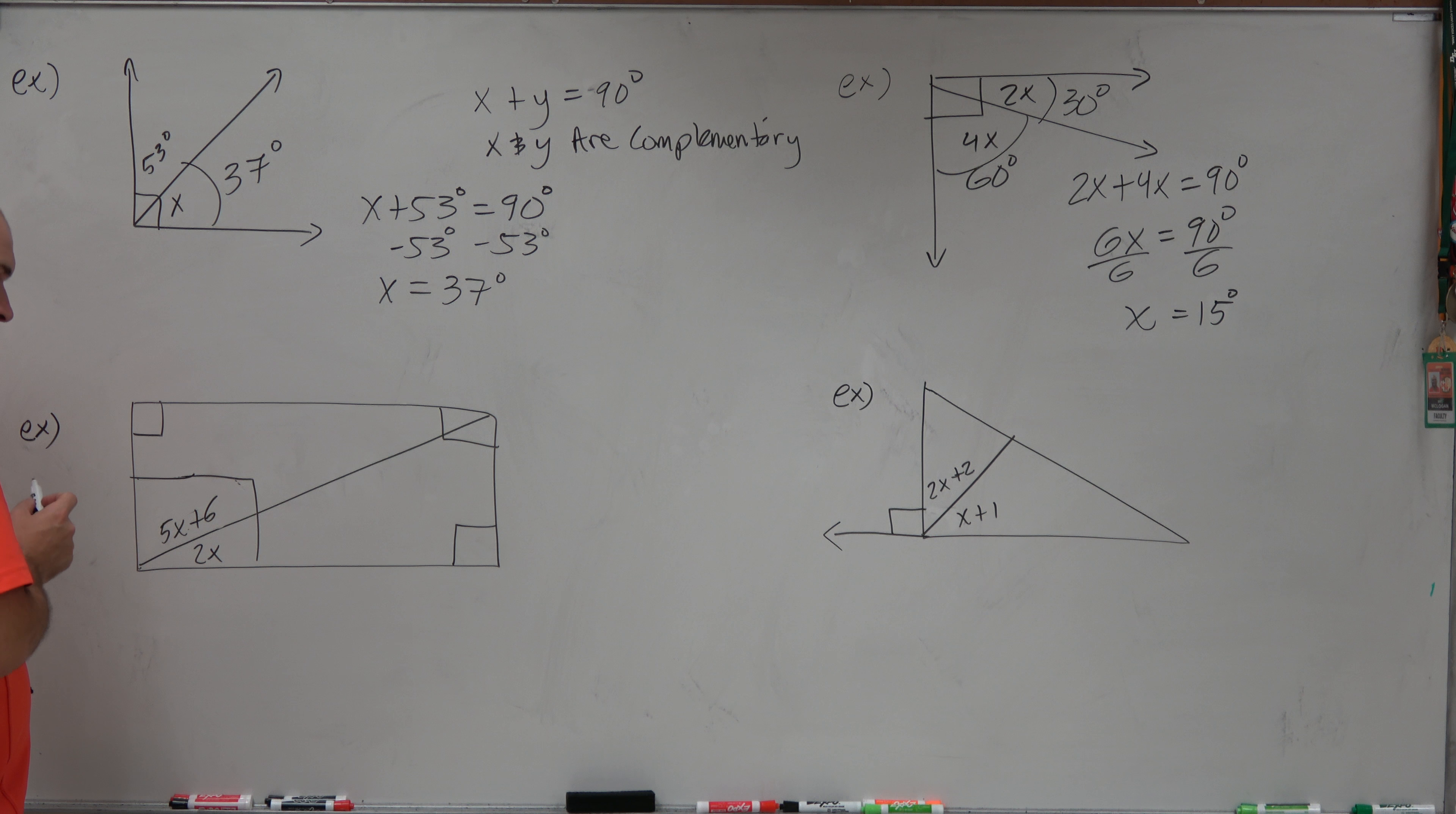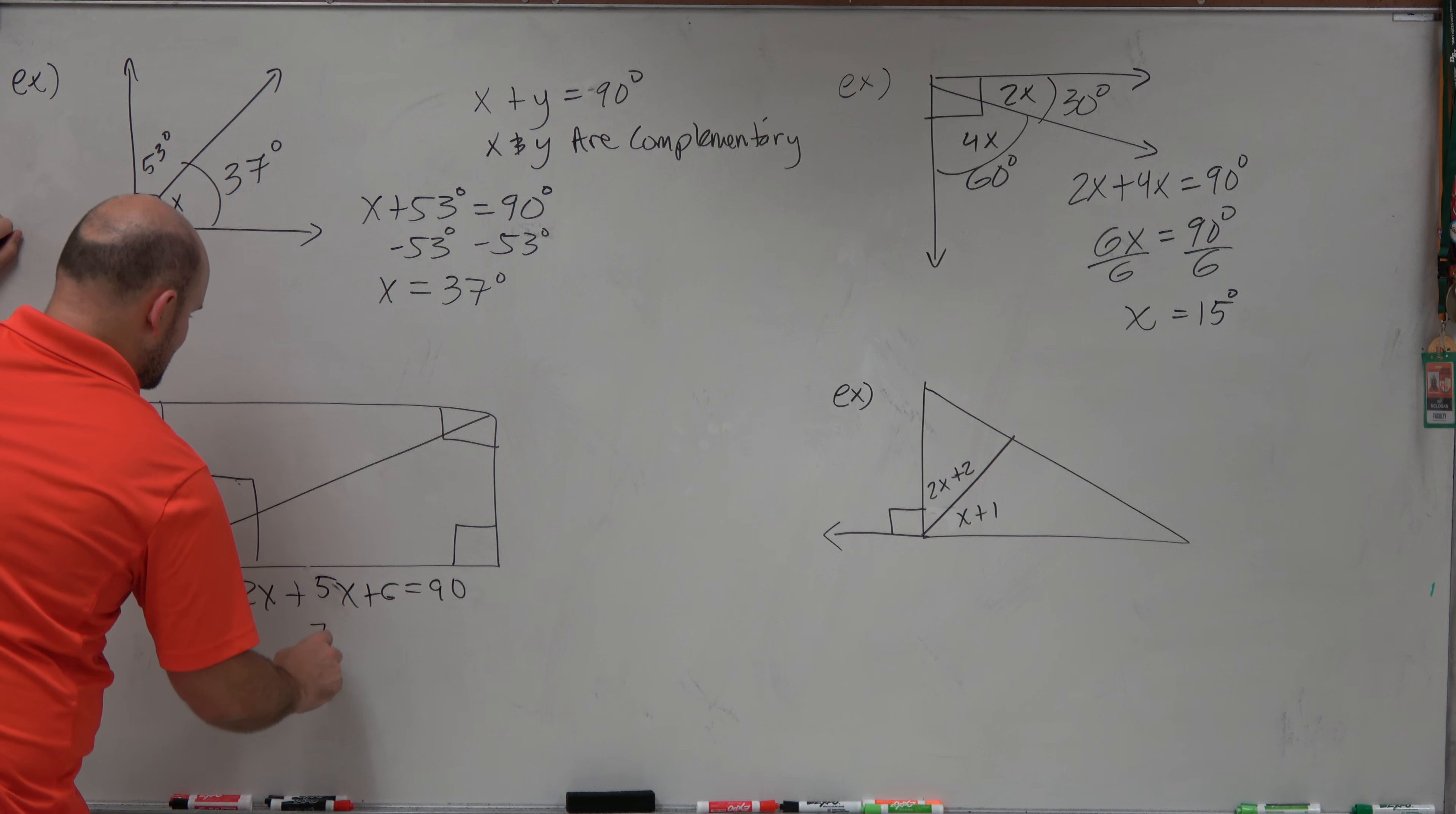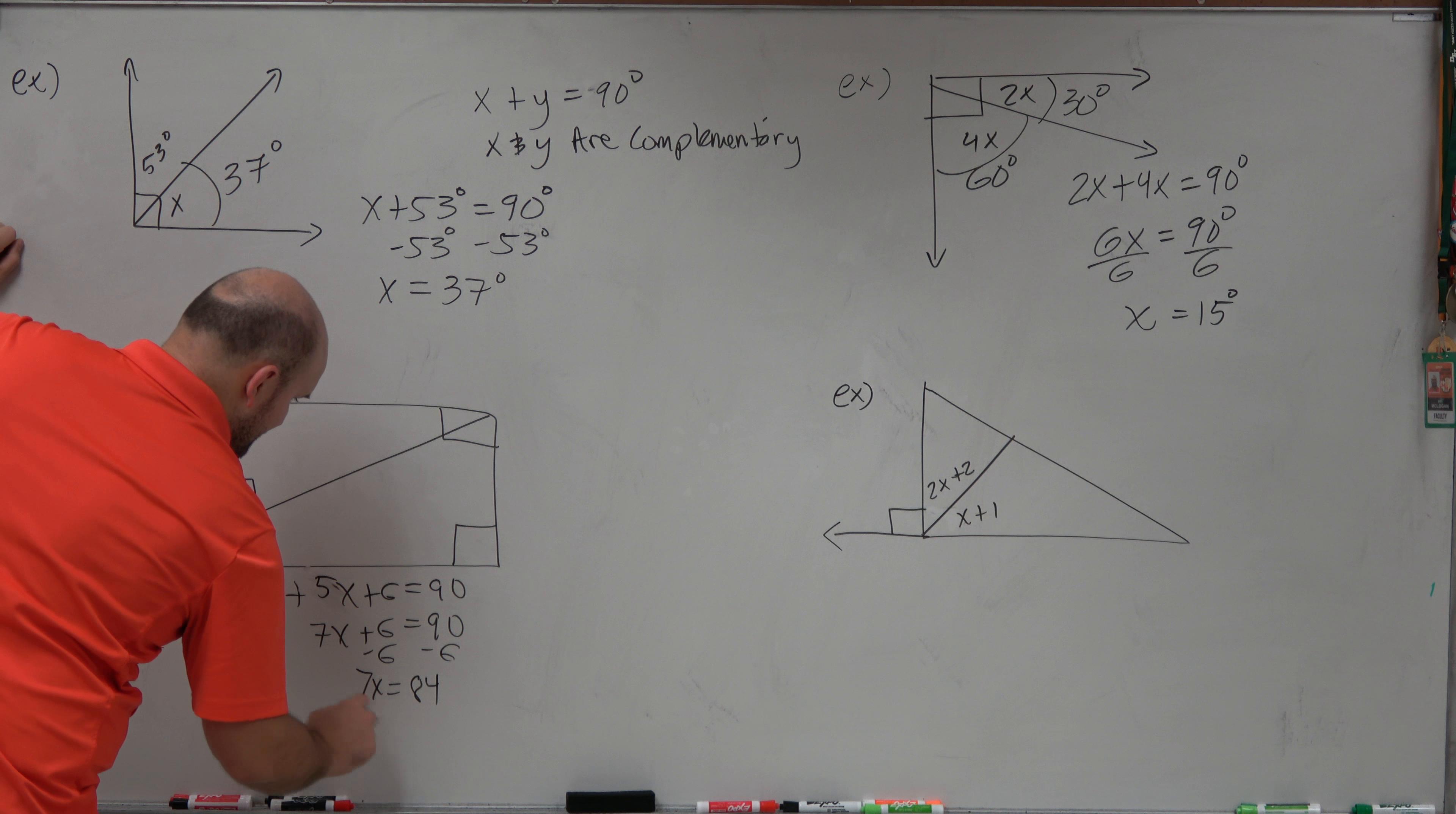So therefore, I can set up another equation. 2x plus 5x plus 6 equals 90 degrees. 2x plus 5x is 7x plus 6 equals 90 degrees minus 6 minus 6. 7x is going to equal 84. So therefore, divide by 7, x equals 12.